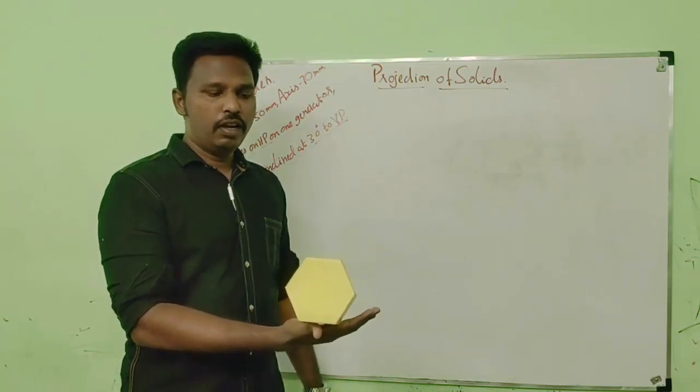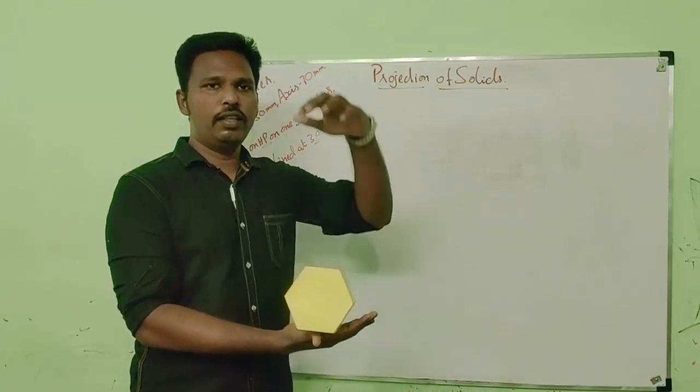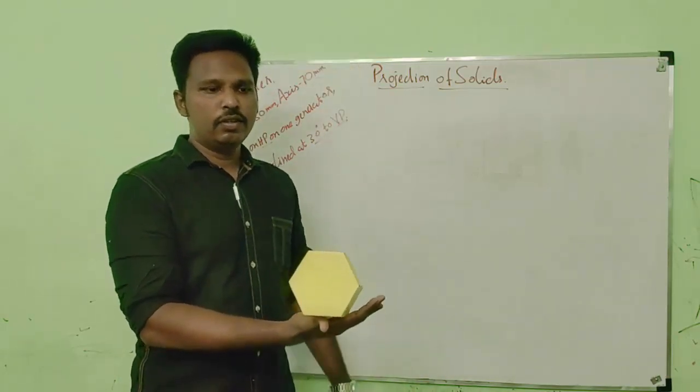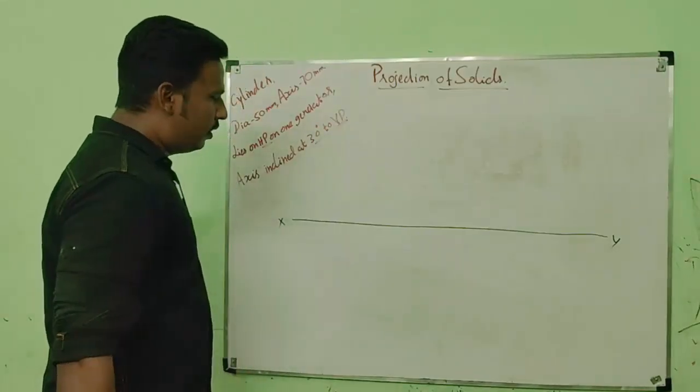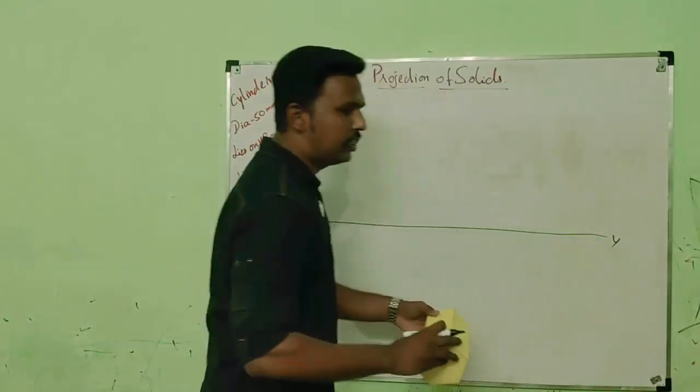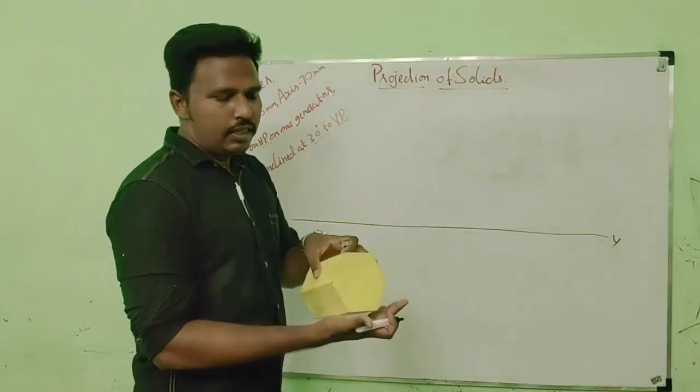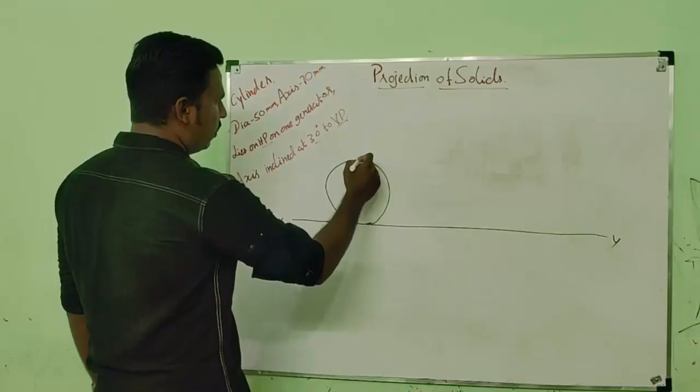So in this orientation, we can see the base view in the front view and the top view is a lateral view. So we have to start from the base view, i.e. front view. As given in the machine, the solid should be resting on HP on its generator. So the solid should actually be XY like. Let us draw 8 generators.